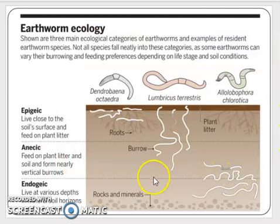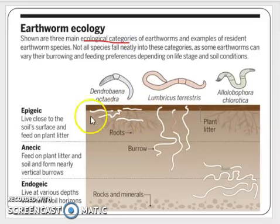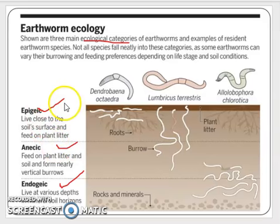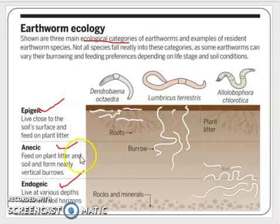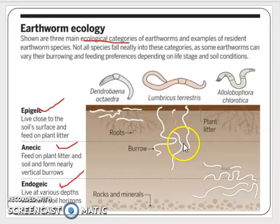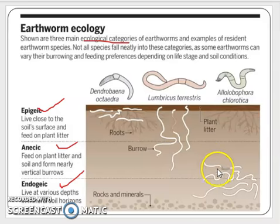This diagram shows the ecology of earthworms existing in three ecological categories: epigenic, endogenic, and anisic forms. Epigenic forms live close to the soil surface and feed on plant litter. Anisic forms also feed on plant litter and soil, and form vertical burrows. Endogenic forms live at various depths in the mineral soil horizons and feed on the soil. Surface feeders are generally used for vermicomposting purposes.